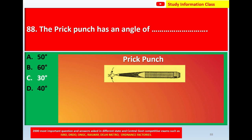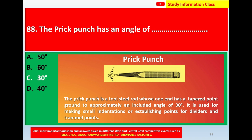The prick punch is a tool steel rod whose one end has a tapered point ground to approximately an included angle of 30 degrees. It is used for making a small indentation or for establishing points for dividers and trammel points. Answer for question 88 is 30 degrees.